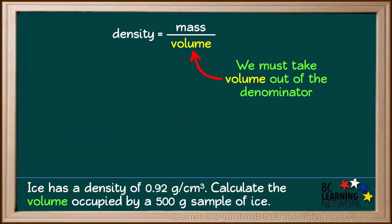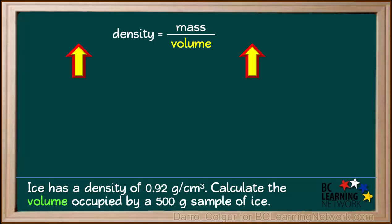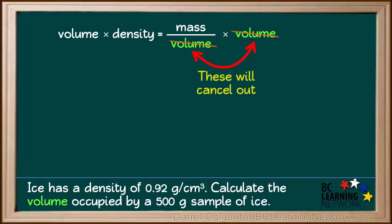In order to solve this equation for volume, we must start by taking volume out of the denominator. We do this by multiplying both sides of this equation by volume. Volume is in the numerator and the denominator on the right side, so these will cancel out. This leaves us only with mass on the right side of the equation.